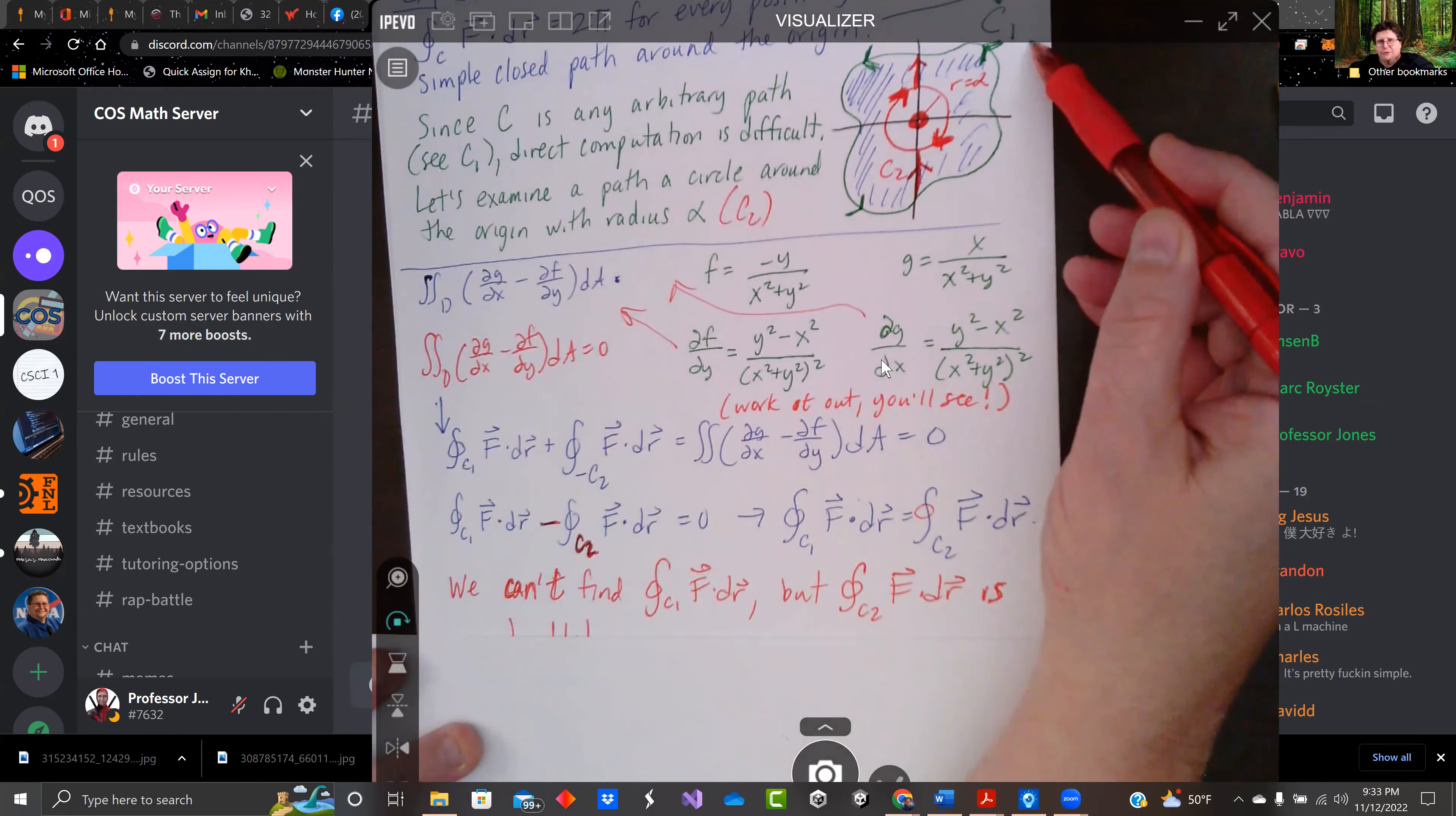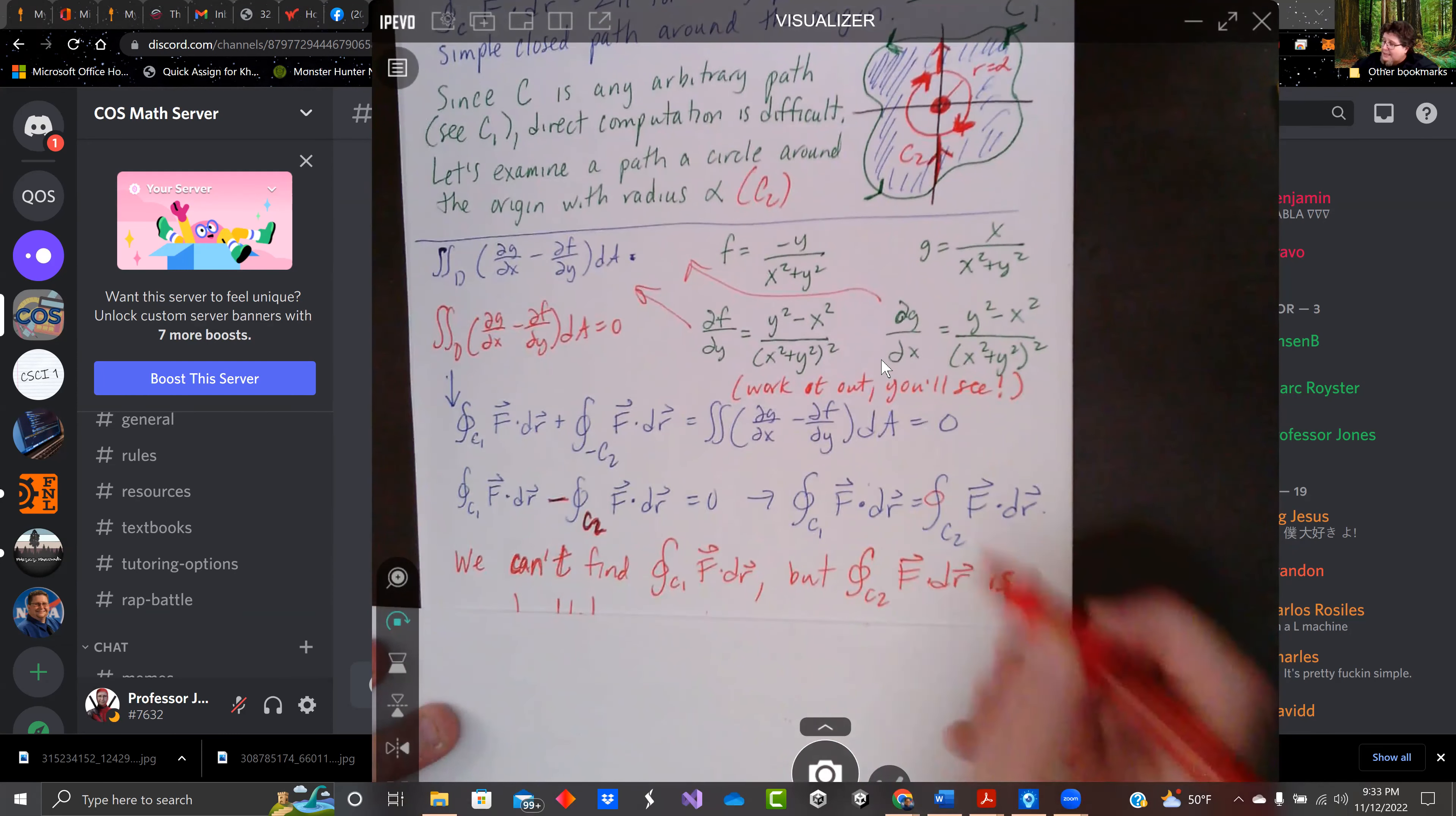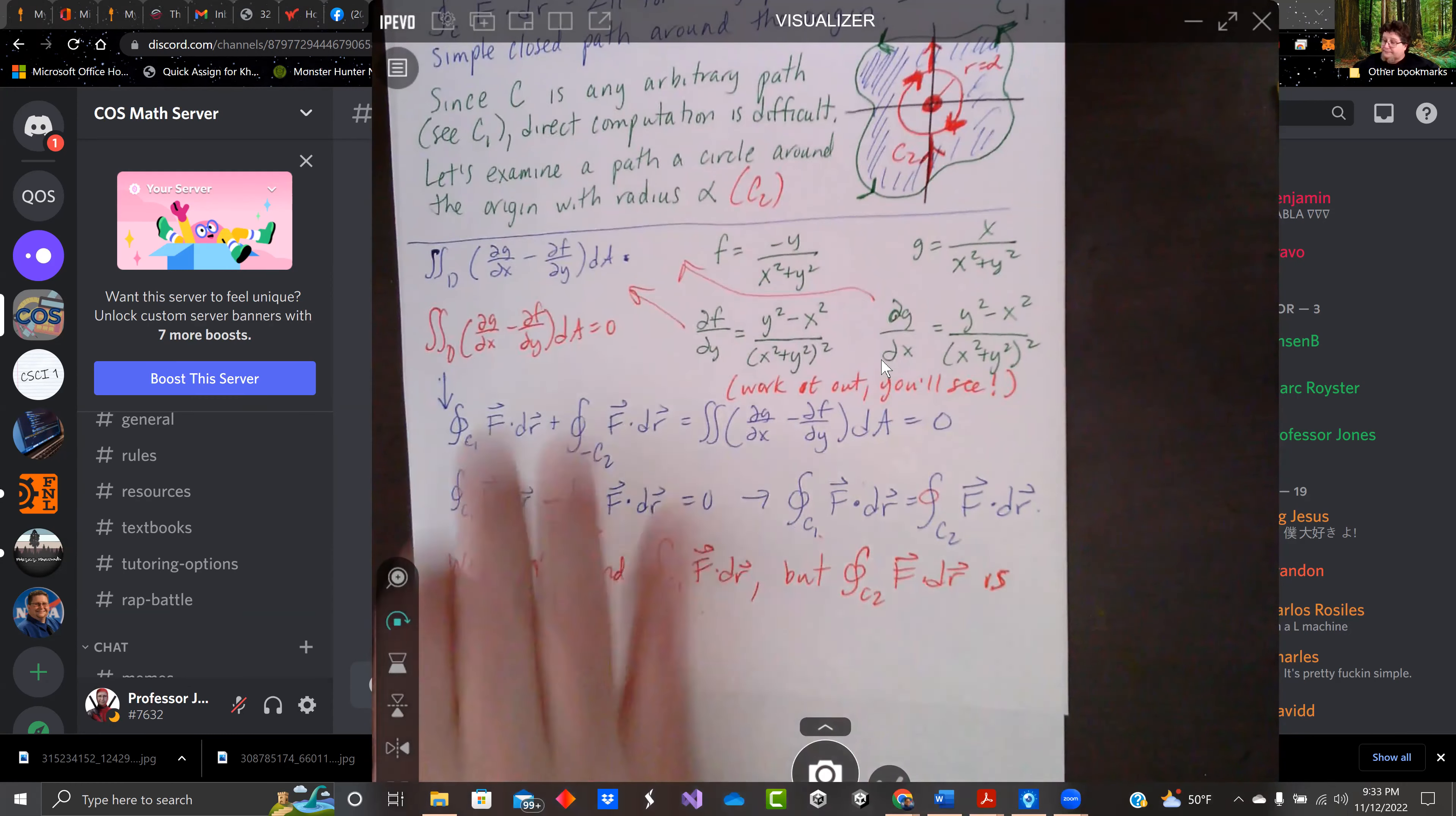The reason why we're not using c1 was because it could be any shape, so finding this one is a pain in the ass. But c2 is a circle of radius alpha, and we know how to deal with that. So if we can find the right side of this integral, we'll know the quantity on the left side of this integral, and it should equal 2π. That's what we're looking for. That's doable. Let's do it.